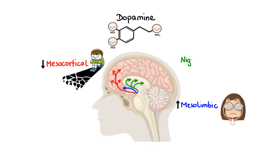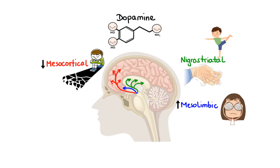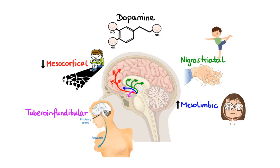Number three, the nigrostriatal pathway, which is part of the extrapyramidal nervous system and controls motor function and movement. Deficiency of dopamine in this pathway can lead to dystonia and parkinsonian symptoms, while excess dopamine can lead to hyperkinetic movements such as tics and dyskinesias. Number four, the tuberoinfundibular pathway, which controls prolactin secretion. Specifically, dopamine in this pathway inhibits prolactin release. Prolactin is a hormone that enables milk production and is also involved in the control of sexual desire and regulation of the immune system.